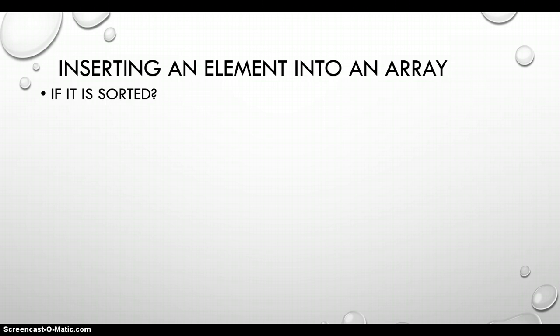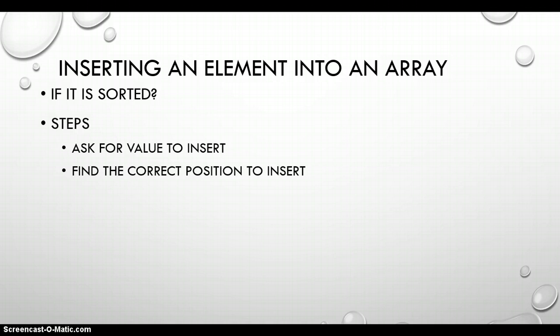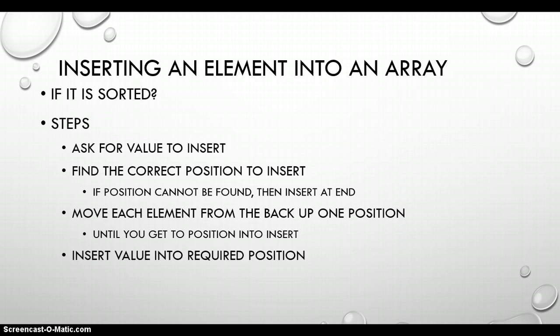For a sorted array, the first step is to ask for the value to insert. Often the user inserting into a sorted array won't know where it must go — it's up to you to put it in the right place. So after asking for the value, we find the correct position to insert the element so the array remains sorted. If no position is found, we insert at the end. If a position is found, we move each element from the back up one position until we reach that position, insert the value there, and then increase the array counter.